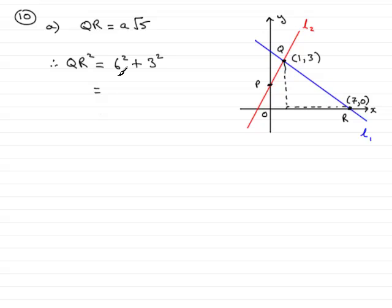Working this out, we have 6² which is 36 and 3² which is 9. Add those together and you get 45. So if I want to find QR, it's the square root of 45.